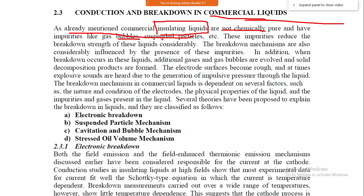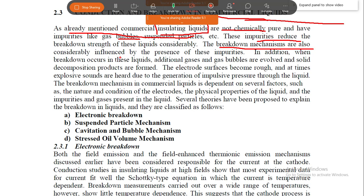The breakdown mechanism — we need to know how breakdown occurs. In gas breakdown, the main considerations are: the primary ionization process, the secondary ionization process, and the photo-ionization process. These three things are important in gas breakdown.